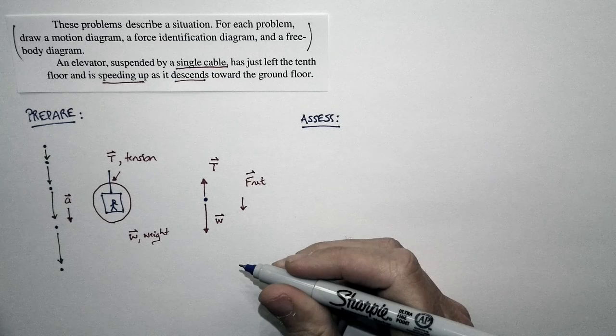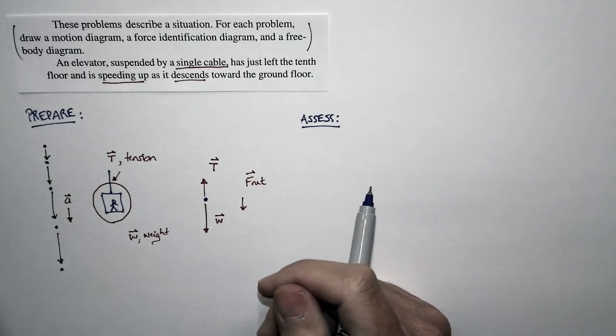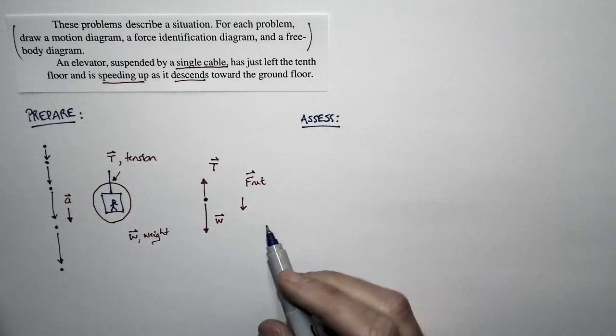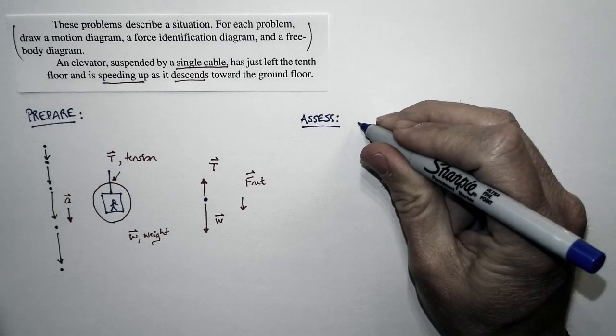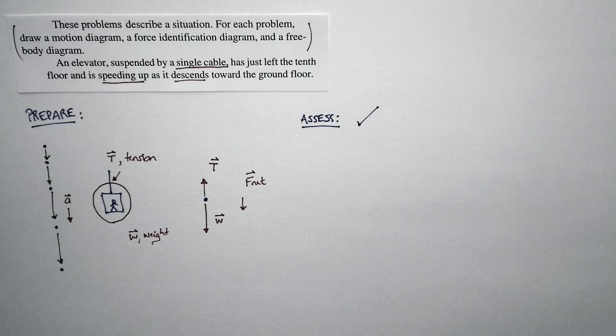As a matter of fact, you might have done something like this if you've ever raised or lowered something on a rope. If you want to lower something on a rope, you just release a little bit of the tension, and the object will start accelerating downward. So in fact, this way we've looked at the problem matches our understanding of the way the world works.